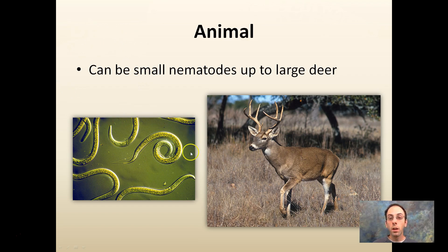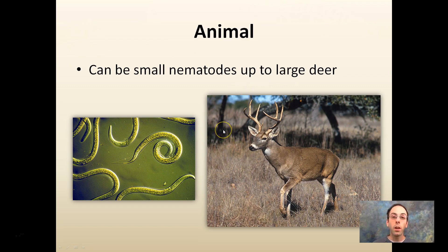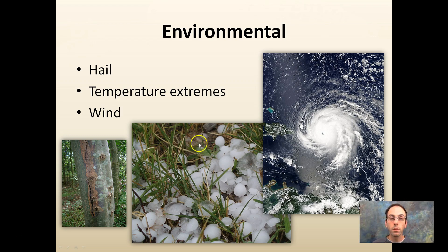Animals can range from very small — like nematodes, which often get overlooked — to very large, like deer or even bear. You want to determine what animals are likely to be in your area. For deer, a deer fence can work; electric fencing can be used for small animals like chipmunks and squirrels. Nematodes are a little harder — you want to work on controlling them in the soil if you can.